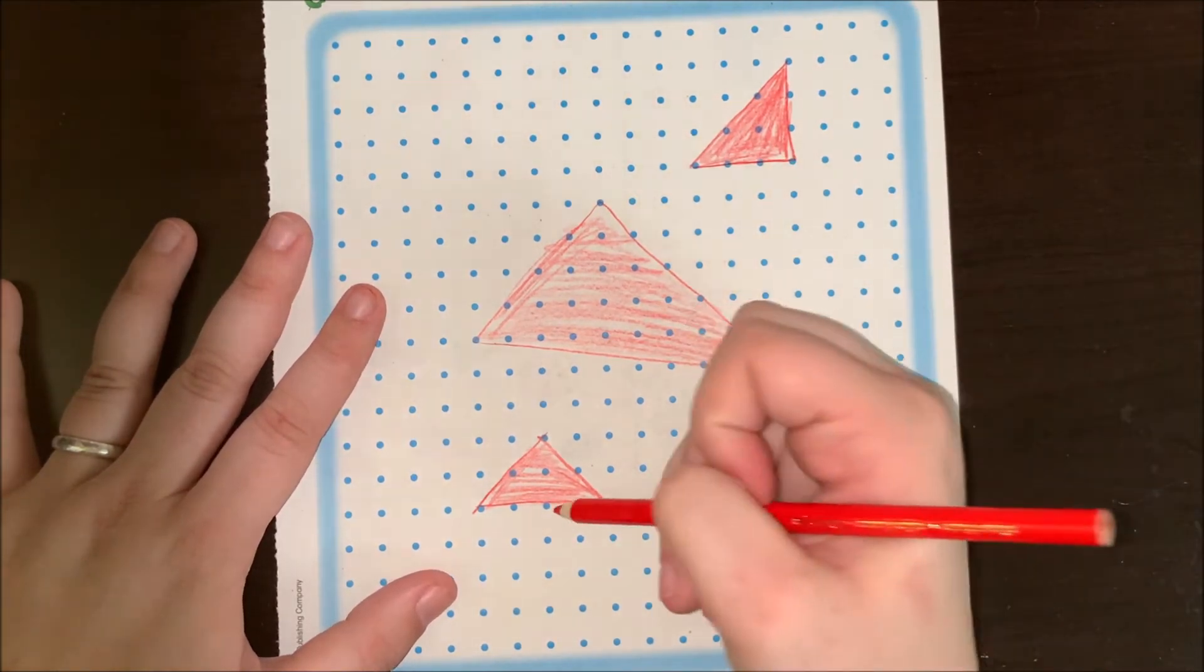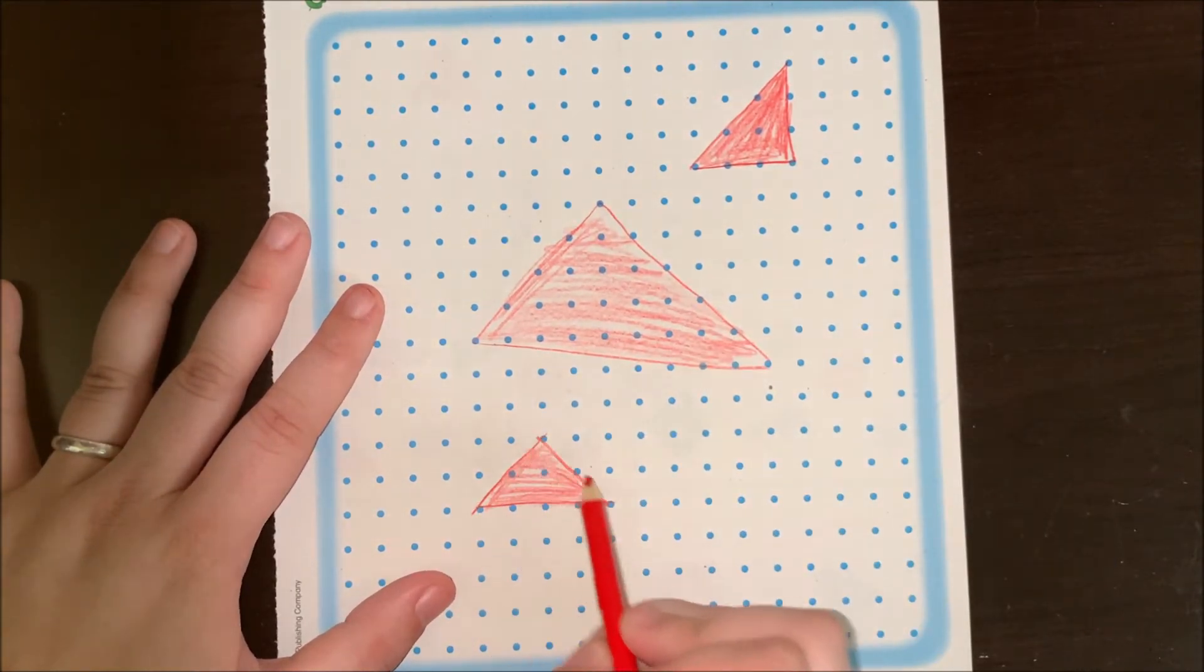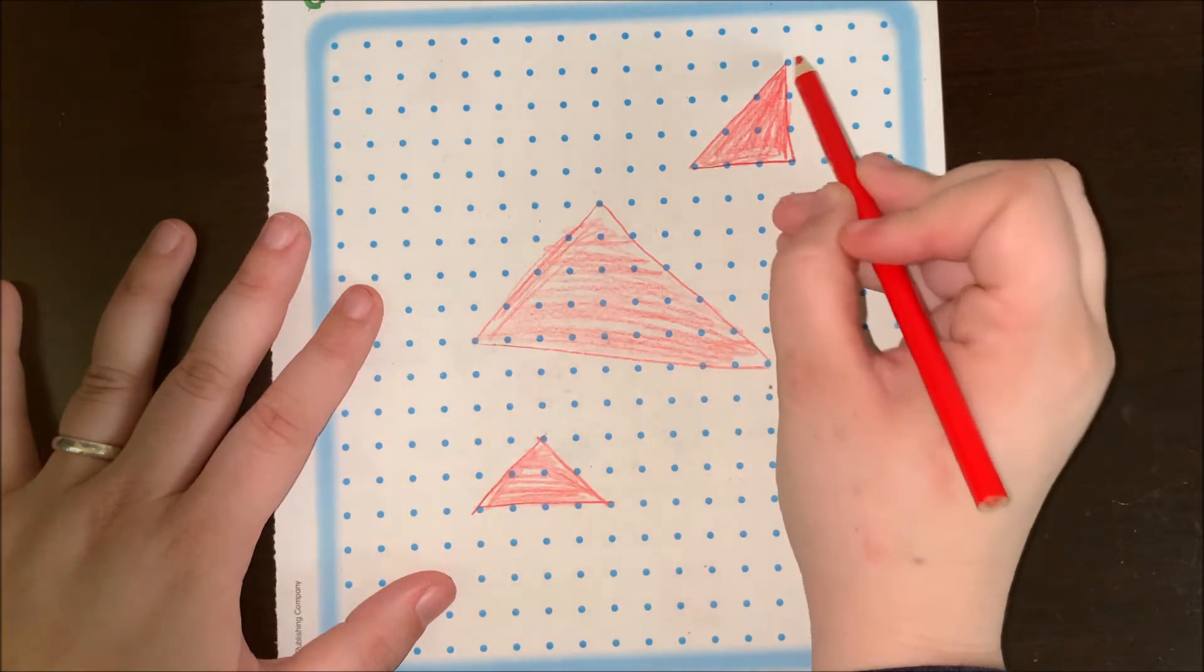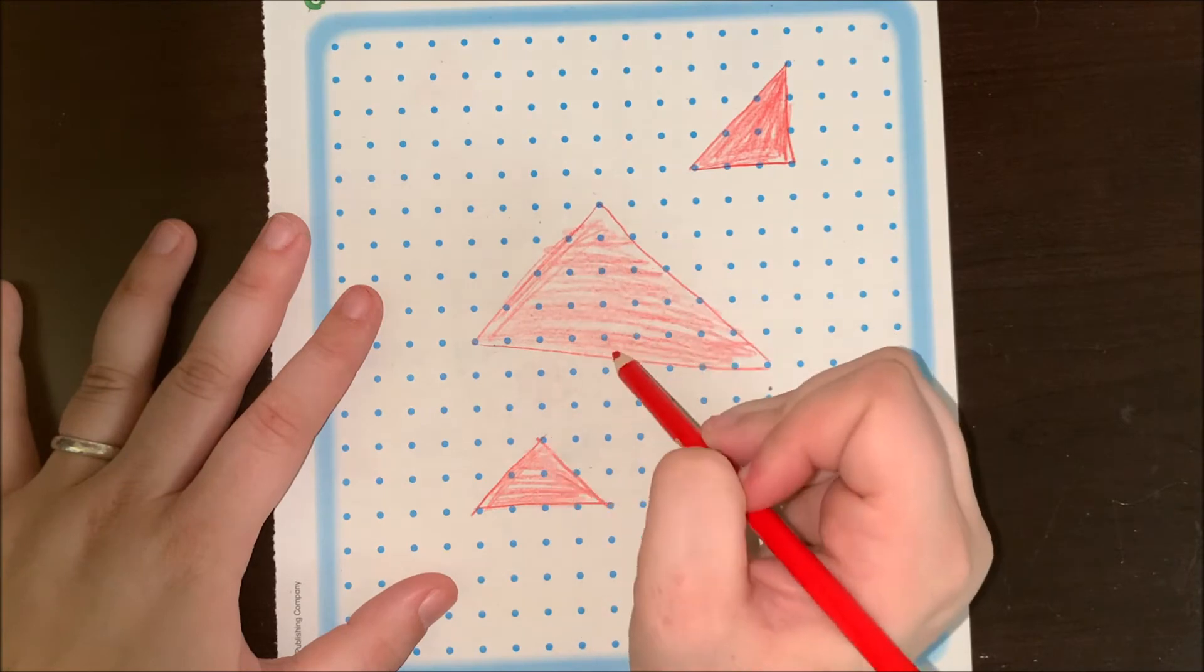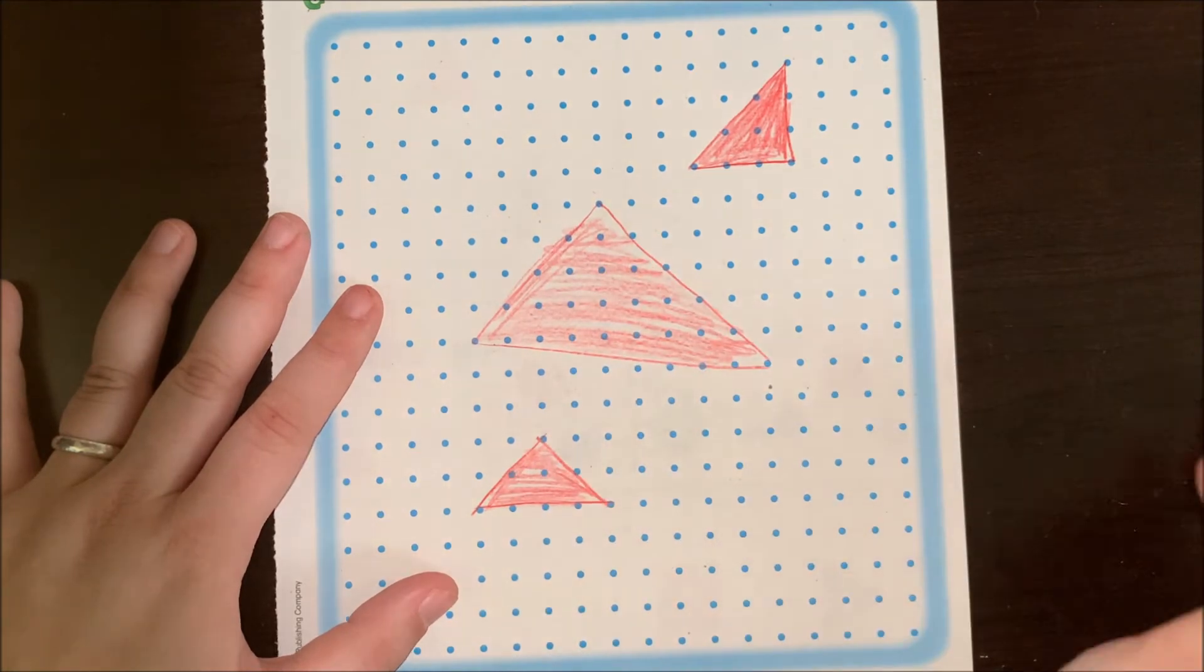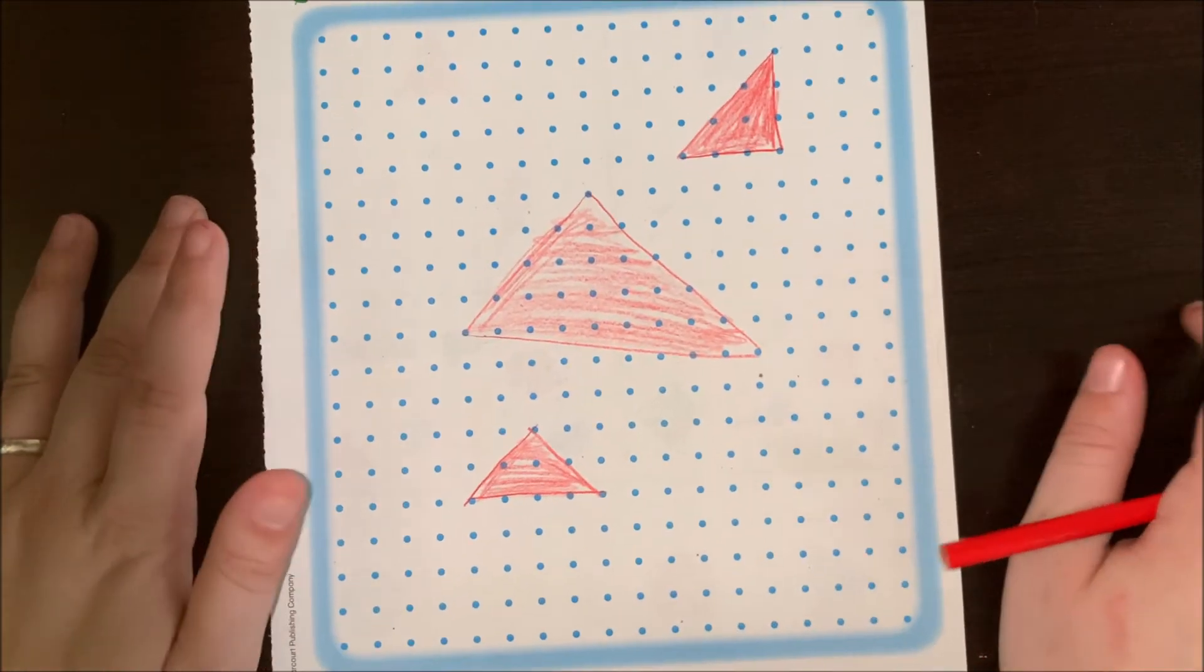None of them are the same size, but as long as I have three vertices and three sides on each one, they are triangles, even if they don't look the same.